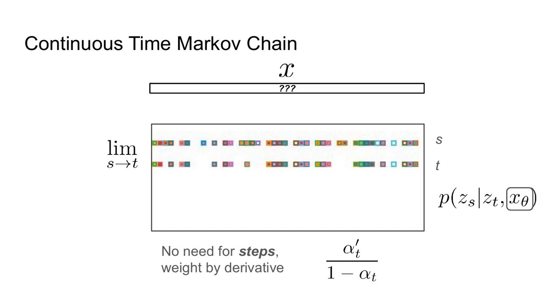This weighting has a particularly nice form. If alpha t is linear, then the numerator is 1 and the denominator just corresponds to t. This means at the top of the network, we weight predictions highly as they are more likely to lead to unmasked words. At the bottom of the network, we have more masks, but the predictions are weighted less.